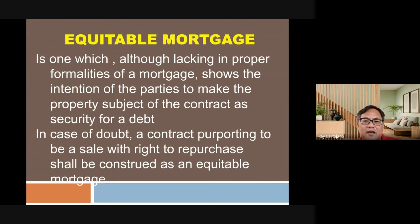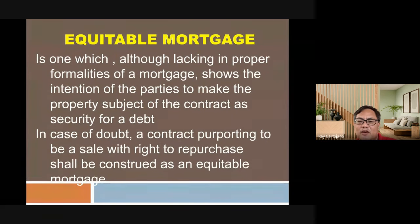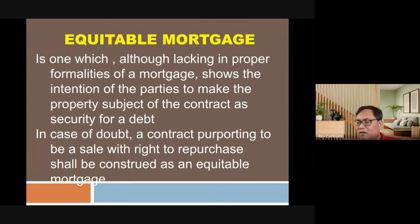Concretely, when someone is in a desperate situation and goes to a loan shark or lending company, instead of documenting it as a real estate mortgage, they use a deed of absolute sale. This is a common occurrence. Courts have been able to recover properties in such cases by treating them as equitable mortgages — recognizing that what really happened was a pledge, not a sale.